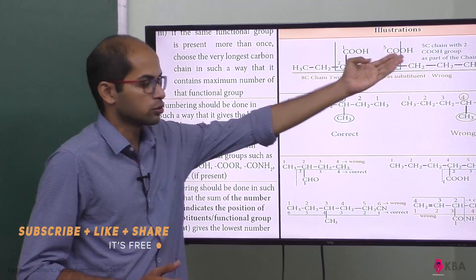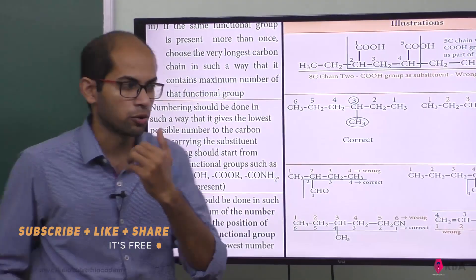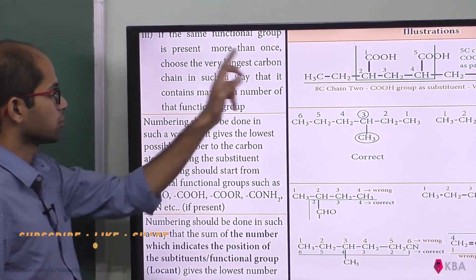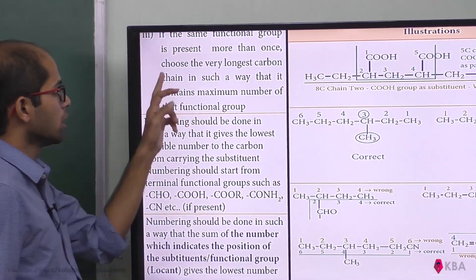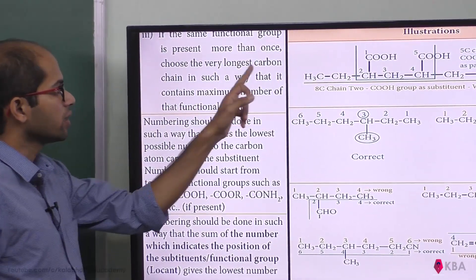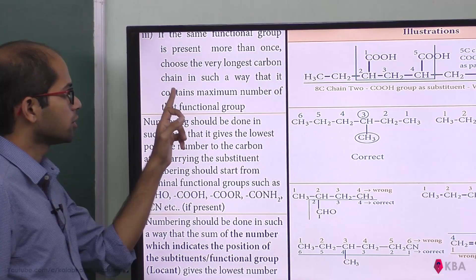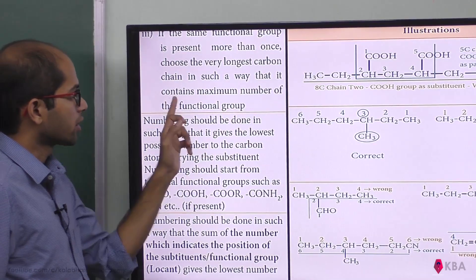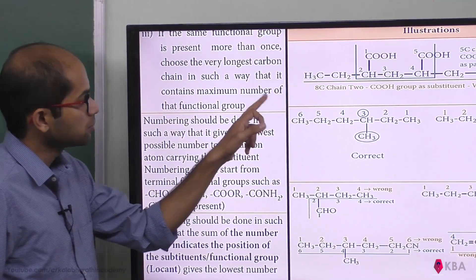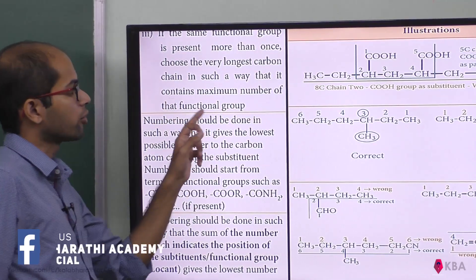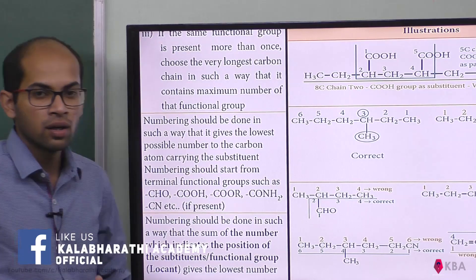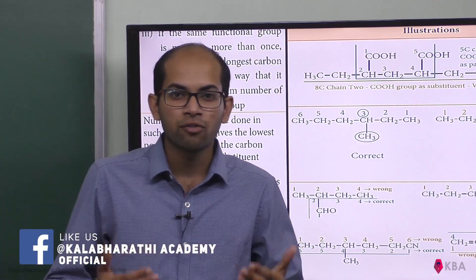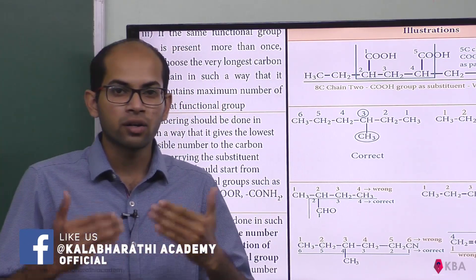If the same functional group is present more than once, choose the very longest carbon chain in such a way that it contains the maximum number of that functional group. If the same functional group is present in the compound, choose the longest carbon chain.